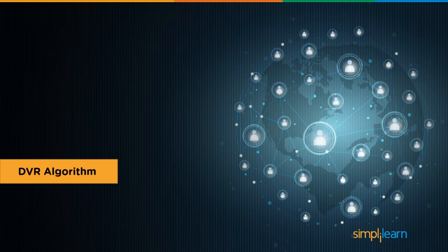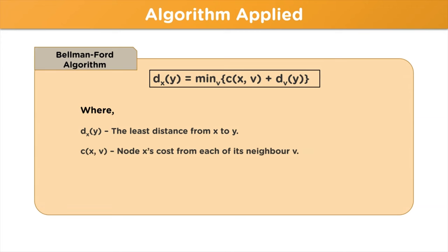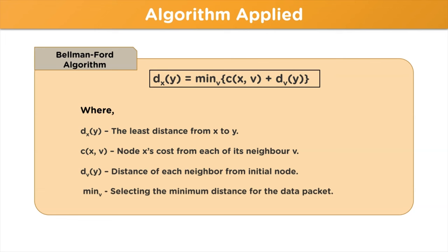The algorithm used in this protocol is termed the Bellman-Ford algorithm. It defines the shortest path a data packet can take to reach its destination node from an initial node. Here, d refers to the least distance from node x to node y; c represents the cost from each neighboring node v; d(v,y) is the distance of each neighbor from its initial node; and min(v) is used to determine the shortest vector after the solution is obtained.